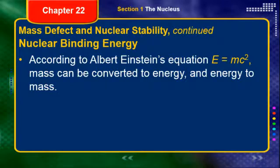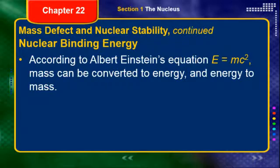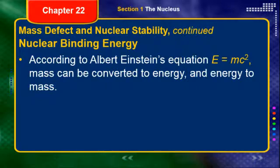What I'm going to give you for some of these sample problems is the mass defect, which is the M term. Since you already know the speed of light because it's a constant, I will give you the mass defect and all you have to do is solve for E. Or vice versa — I could give you E, the energy, and you would just have to solve for M, the mass defect. This is actually fairly simple math, as long as you don't get intimidated.